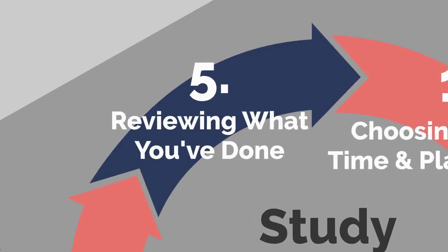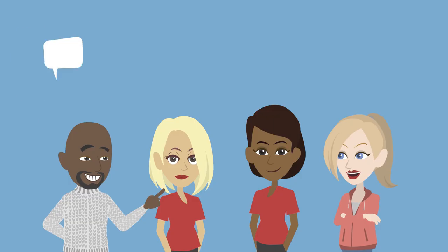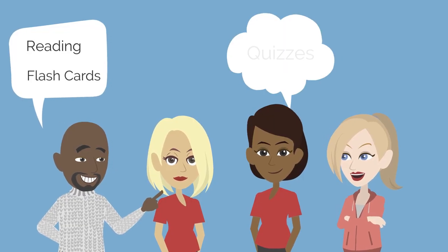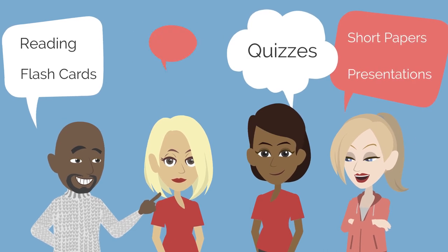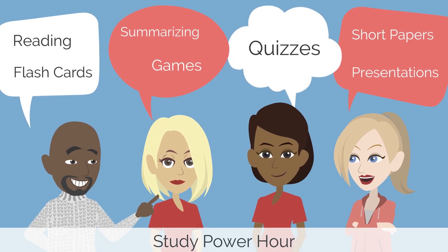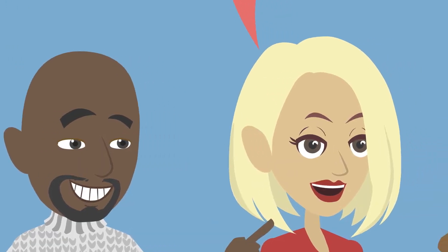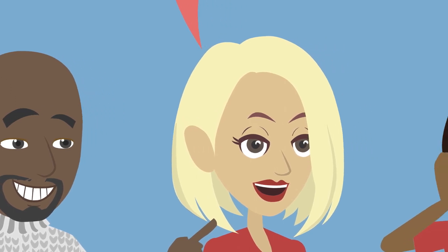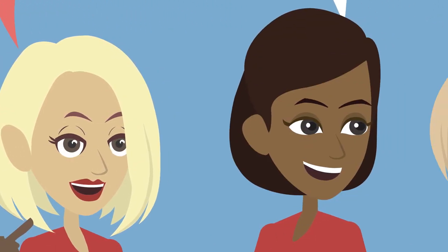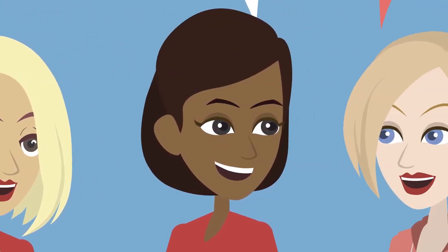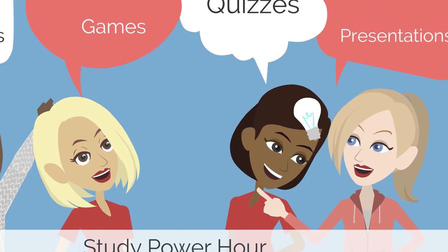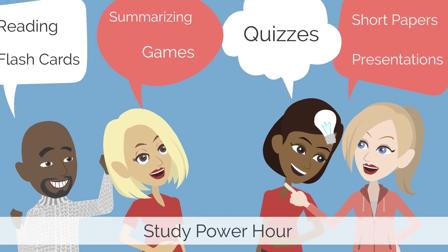Number five: reviewing what you've done. Before students finish their study power hour, they should review what they've done. They should ask themselves if they've accomplished what they set out to do and what comes next. This is an honest self-check-in to see if the strategy that they used worked. If needed, they can adjust for the next time.